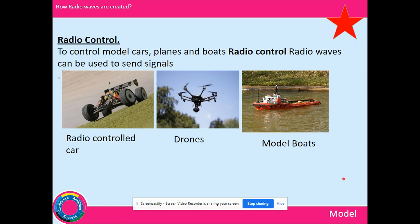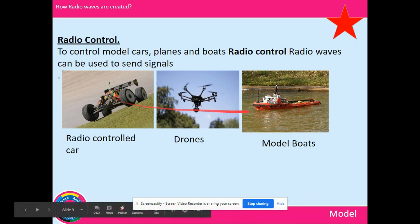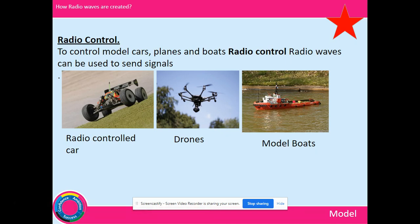Radio control is another application. Radio waves can be used to send and receive signals to control model cars, planes, and boats, as well as drones. These can be flown or operated over a considerable distance. Even though some of these are toys, they have important applications for situations where you don't want people involved — for example, using a drone instead of a helicopter.